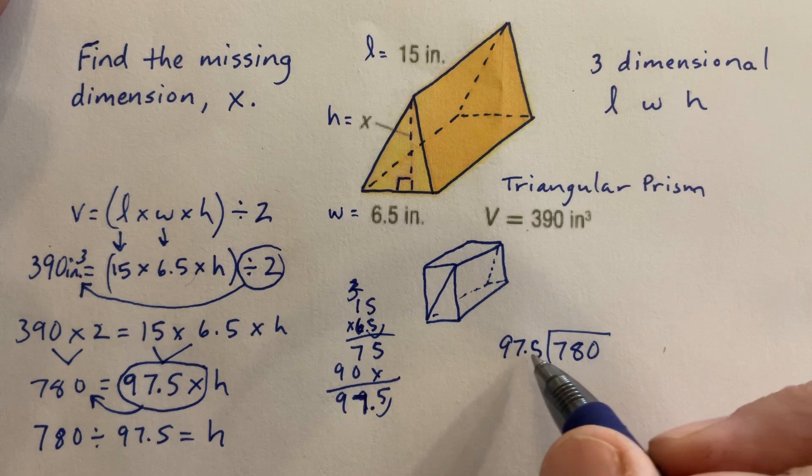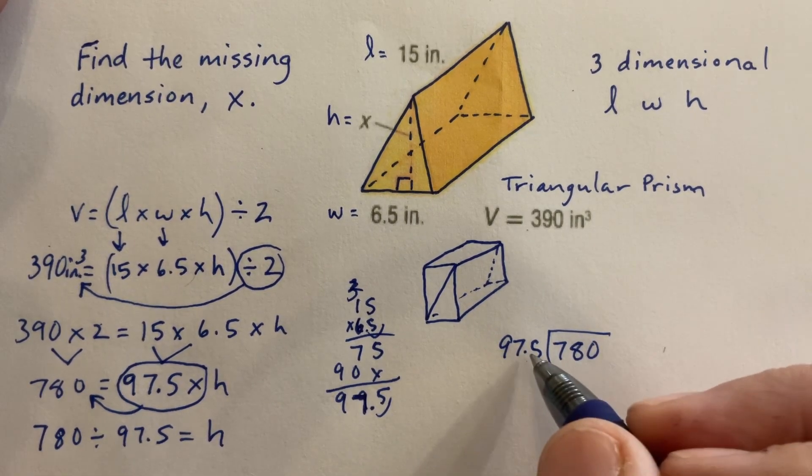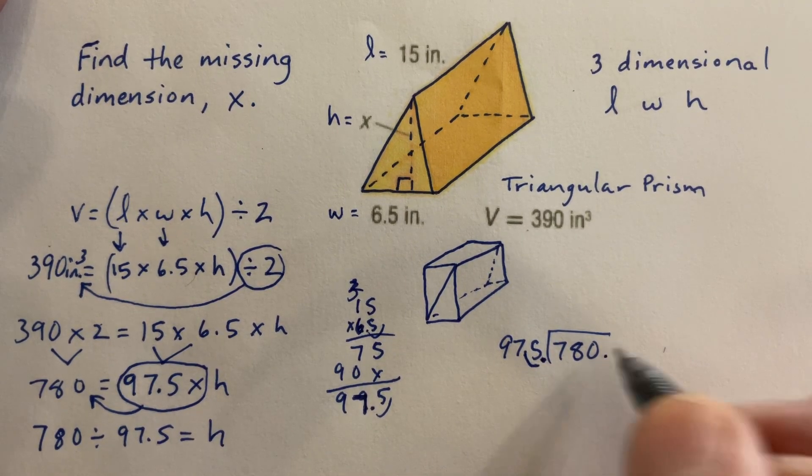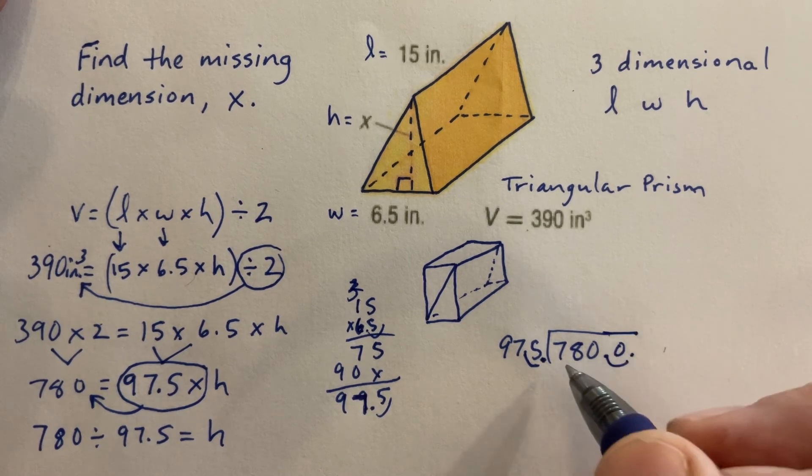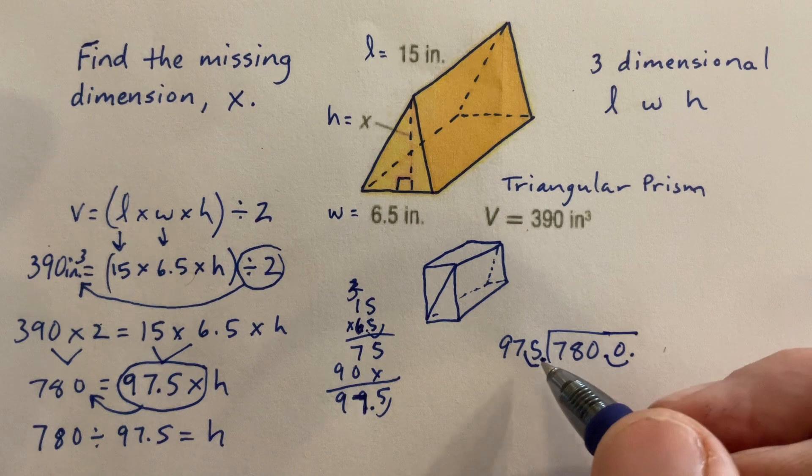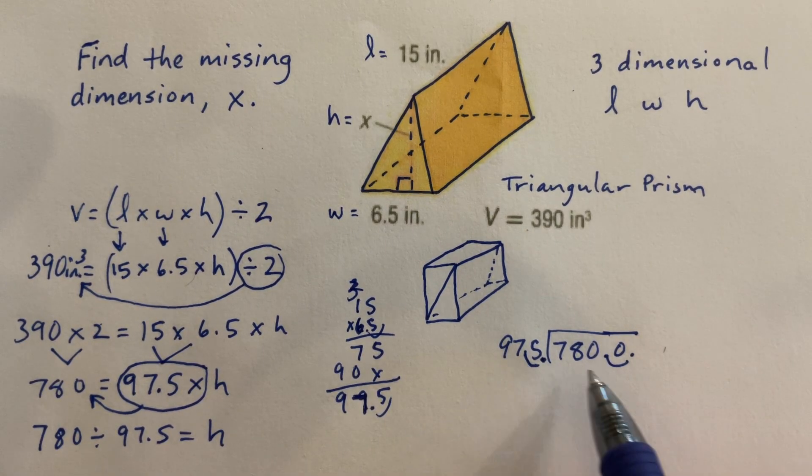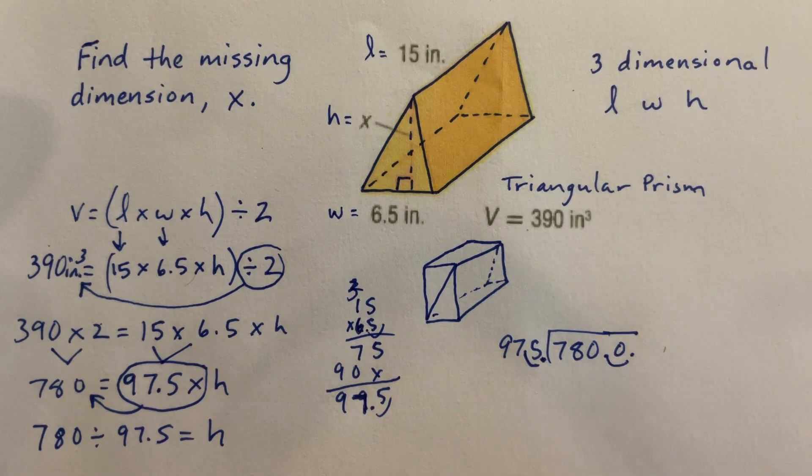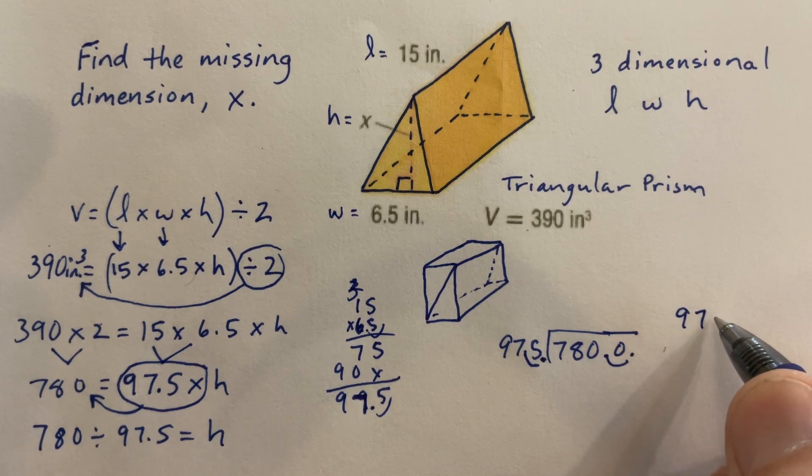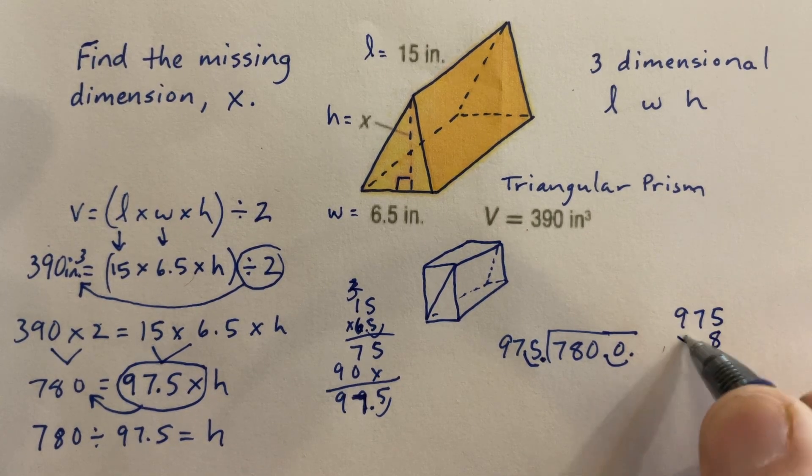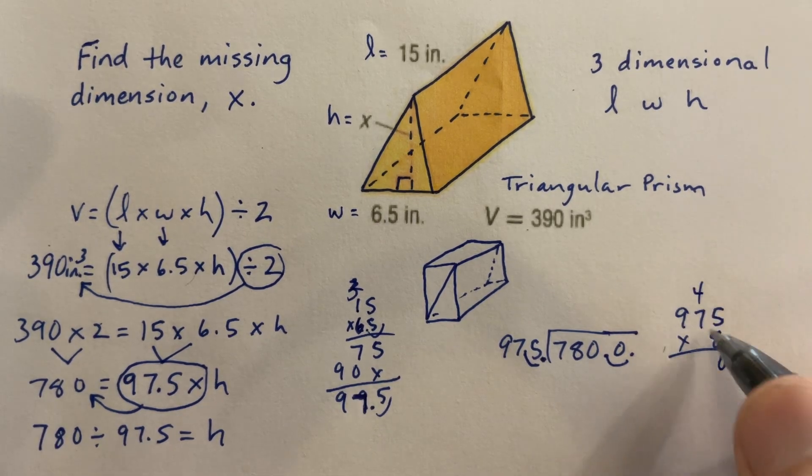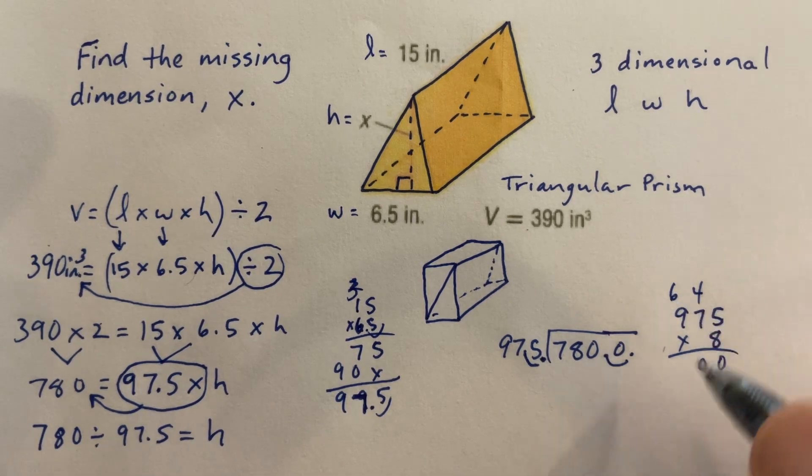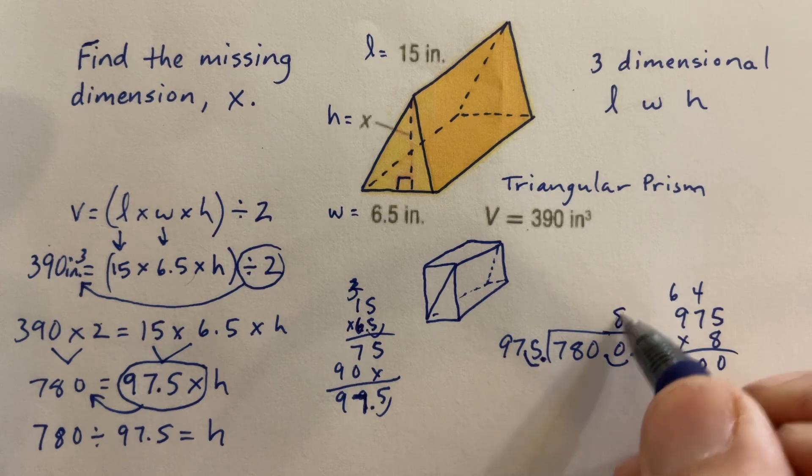So 780 divided by 97.5. When I'm doing these big division problems, I like to estimate. First, I need to remember I can't have a decimal in the divisor, so I need to move it one time on the outside. If I do that, I've got to do it on the inside. So it's really 7,800 divided by 975. Well, this is about 1,000, this is about 8,000. So I'm going to say 1,000 goes into 8,000 about 8 times. 975 times 8, we have 40, carry the 4, 56 plus 4 is 60, 72 plus 6 is 78. So it goes in exactly 8 times.